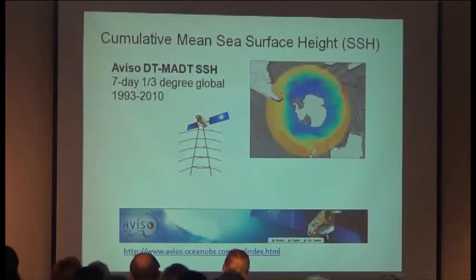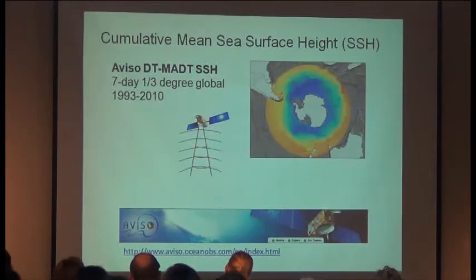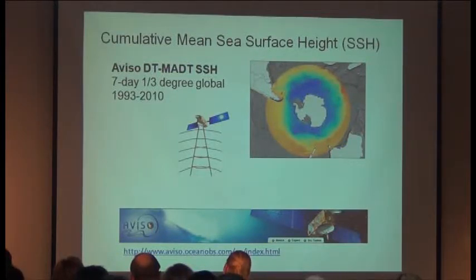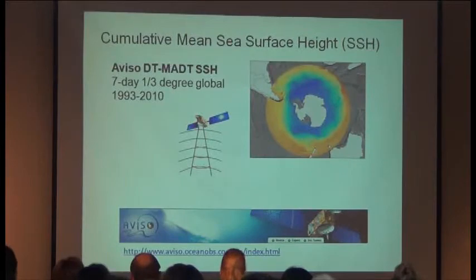A different type of sensor that many people may not be as used to seeing is altimetry data, which is quite commonly used. Altimetry data gives us information on sea surface heights. Sea surface height directly isn't as much of an interest to ecologists or whale biologists, but the products created from it — looking at changes in sea surface heights — can tell us a lot about the dynamics of oceanography. Here we're looking at seven-day, one-third-degree global data from 1993 to the present using the AVISO data system, along with seasonal products created from this.